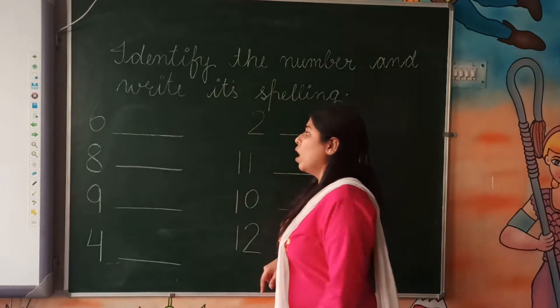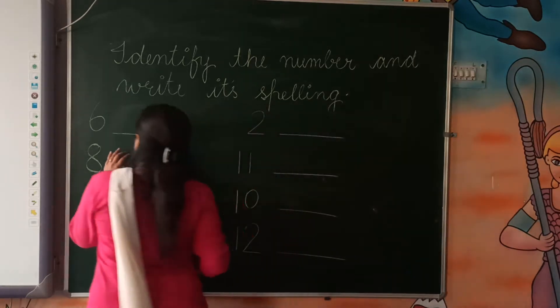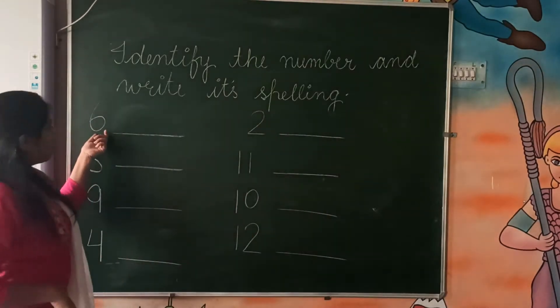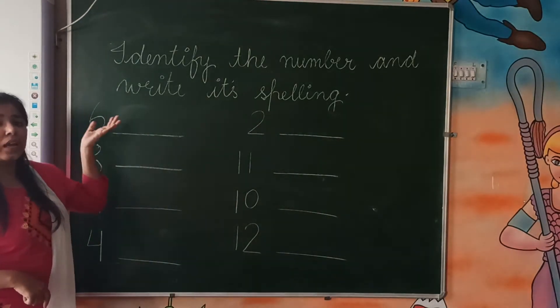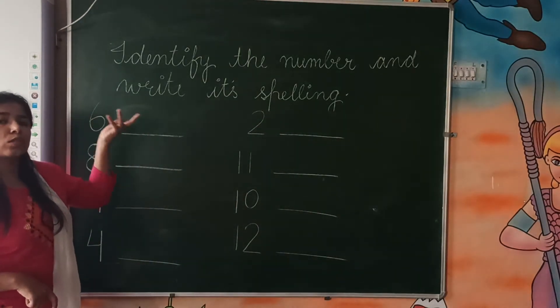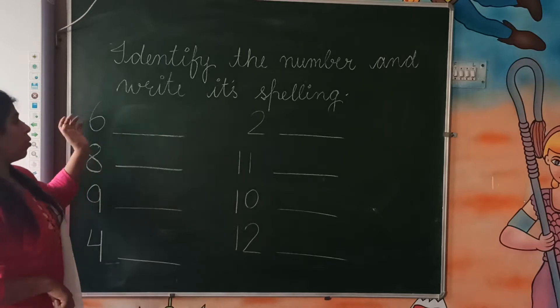So what you have to do — you have to identify the number and then you have to write its name, or spelling you can say. Okay?